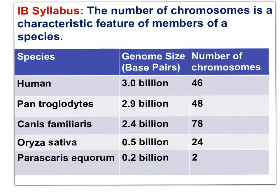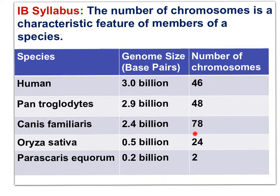Humans have 46 chromosomes, chimpanzees have 48, the domestic dog has 78, rice has 24, and the roundworm Parascaris equorum has 2. Notice that despite having more chromosomes, the genome of the dog is smaller than the genome of a human, because chromosomes are simply linear strands of DNA that vary in size — 78 smaller chromosomes yield a smaller genome than 46 larger chromosomes.